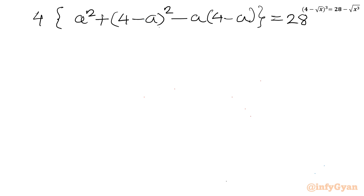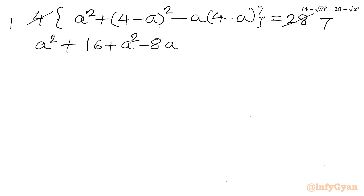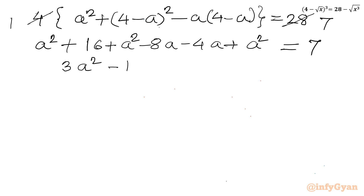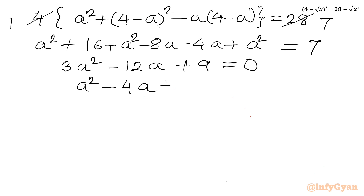Dividing both sides by 4 gives 7 on the right. Now expanding: a² + (16 + a² - 8a) - (4a - a²) = 7. Collecting terms: 3a² - 12a + 16 = 7, which gives 3a² - 12a + 9 = 0. This equation is divisible by 3, yielding a² - 4a + 3 = 0.